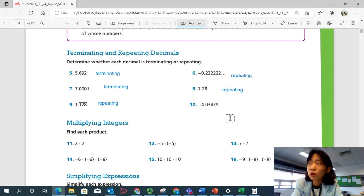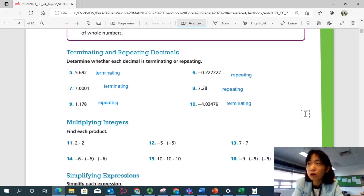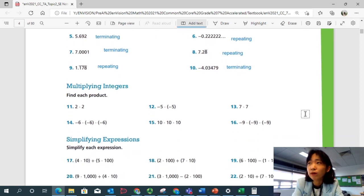Number 10. Negative 4.03479 is a terminating decimal. That wasn't too hard, right? Alright. Let's look at 11. Find each product. You multiply 2 times 2. That dot means you multiply.